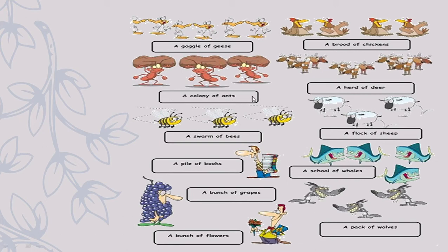A colony of ants — the collective noun is 'colony' and it is used for ants. Next, a herd of deer — collective noun is 'herd'. A swarm of bees — the collective noun is 'swarm', used for bees. So when you see a swarm, that means it is a collection of bees. Similarly, a flock of sheep. A pile of books — when we see many books together we can say it is a pile of books. A school of whales — the collective noun is 'school'. A bunch of grapes.